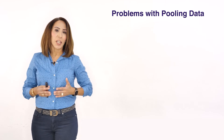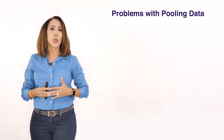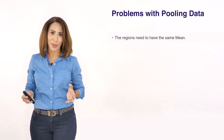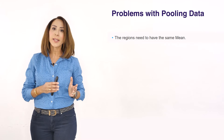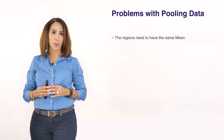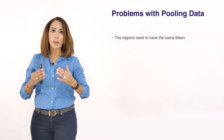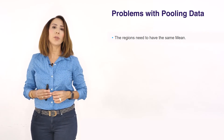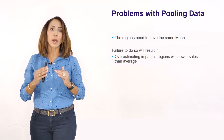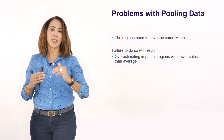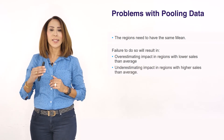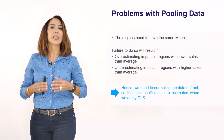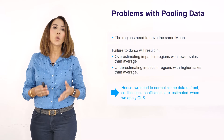Pooled regression doesn't come without complications. To apply OLS, the regions you are stacking need to have the same average. However, this is not always the case — sometimes we pool regions where some have high sales and others have low sales. If you don't apply any transformation or normalization and apply OLS to the non-standardized data, you will overestimate sales in low-selling regions and underestimate in high-selling regions. That's why it's advisable to apply some kind of normalization before running pooled regression.